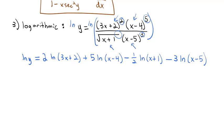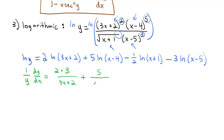This derivative is going to be much easier using implicit differentiation. The derivative of natural log of y is (1/y)·(dy/dx), which equals 2 times 1 over (3x + 2) times 3 — the derivative of the inside — plus 5 over (x − 4), minus (1/2) over (x + 1), minus 3 over (x − 5).